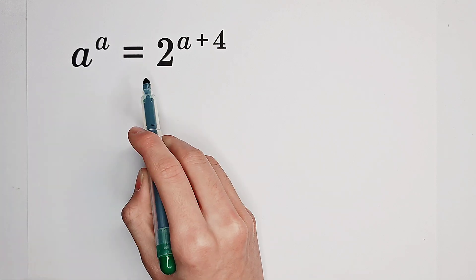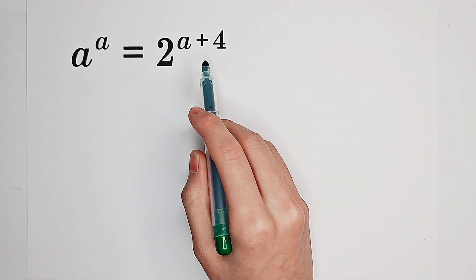Solve for A such that A to the power of A equals 2 to the power of A plus 4. What shall we do?